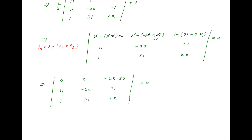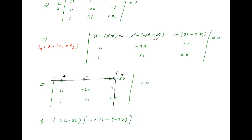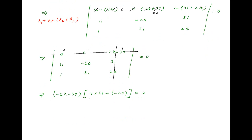Notice that there is only one non-zero element in the first row. Opening the determinant around that element, we get (−2k − 30) times (11×31 − (−20)) equal to 0. The expression in the brackets is not equal to 0, and therefore it follows that −2k − 30 = 0, which implies that k = −15, which is the required answer.